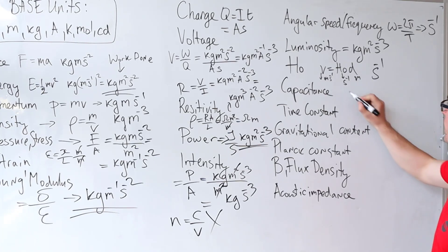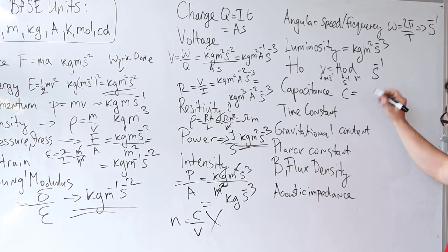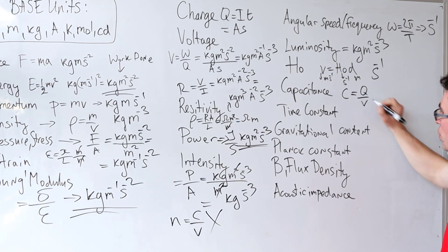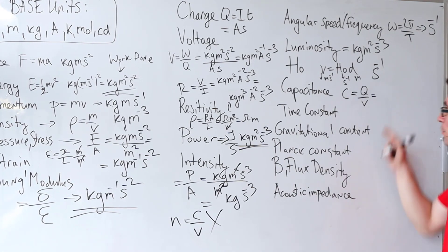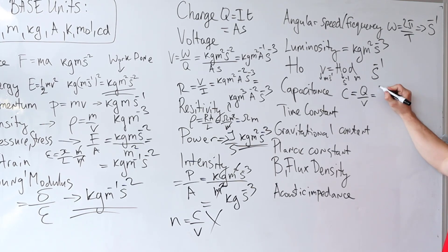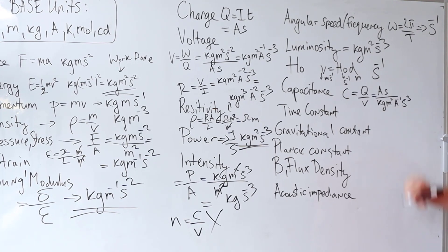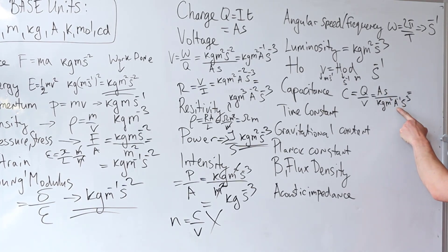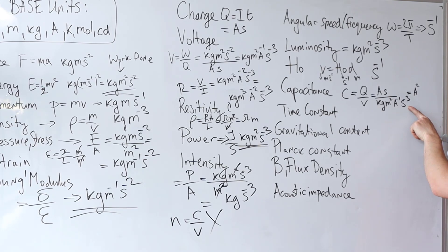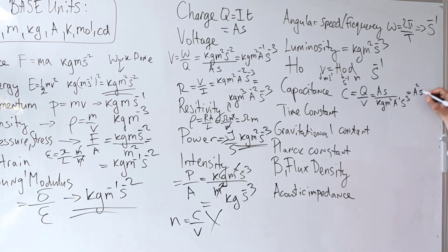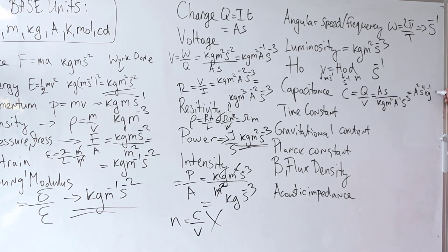Capacitance is defined as the amount of charge divided by unit voltage, Q divided by V. Q is in amp seconds. Voltage is in kg m² A⁻¹ s⁻³. A divided by A⁻¹ gives A squared. S divided by s⁻³ is s to the power of four. What we're left with is kg⁻¹ m⁻² A² s⁴.